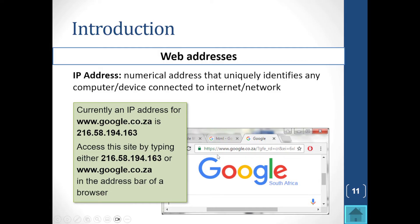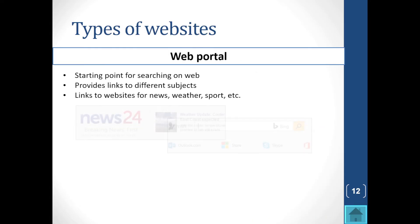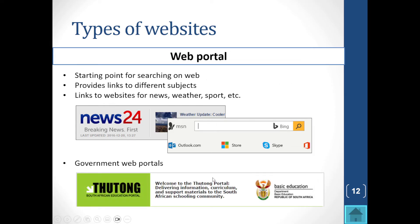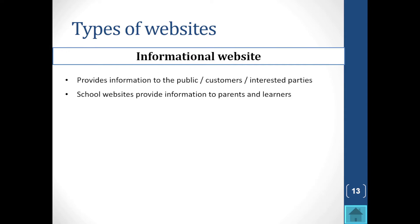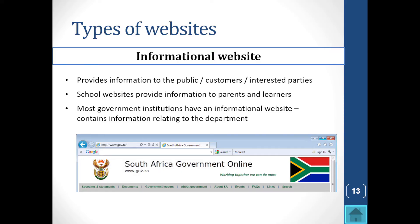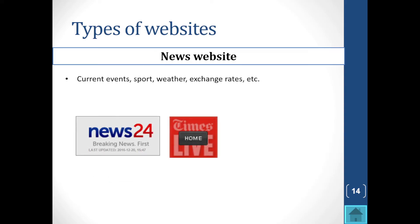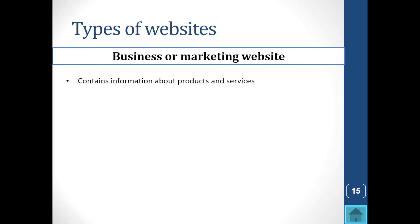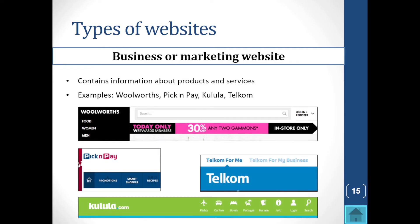Now let's look at the types of websites. Web portals are usually the starting point for searching on the web — they have links to a variety of other sites, such as government web portals like Tutong. Informational websites give you a lot of information on particular topics. News websites give you current events, magazines, and newspapers. We also have business or marketing websites.